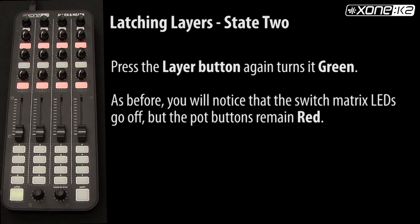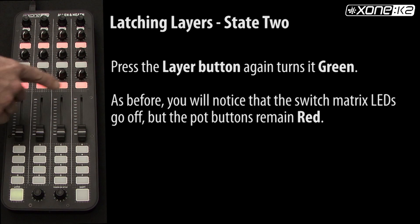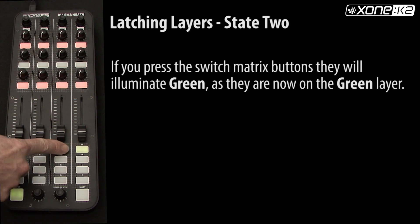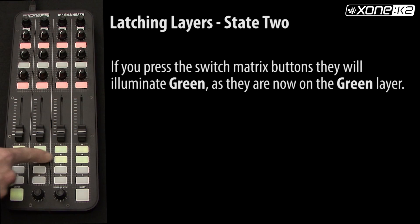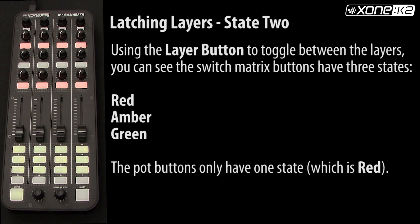Pressing the layer button again turns it green. As before, you will notice that the switch matrix LEDs go off but the pop buttons remain red. If you press the switch matrix buttons they will illuminate green, as they are now on the green layer. Using the layer button to toggle between the layers, you can see the switch matrix buttons have three states: red, amber, and green. But the pop buttons only have one, which is red.